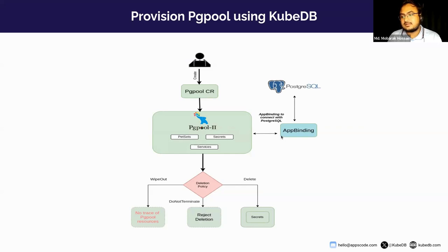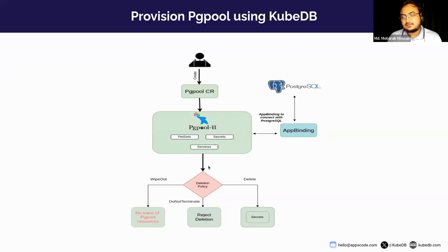If you use a KubeDB-managed Postgres instance, a binding will be created automatically with it, and you can refer that binding to the PgPool. If you use an external Postgres which is not managed by KubeDB, you can just create the binding manually and refer it to the PgPool so that the PgPool server can connect to Postgres. We also have multiple deletion policies — one is 'WipeOut', so if you use this and delete the PgPool, there will be no trace of PgPool resources.